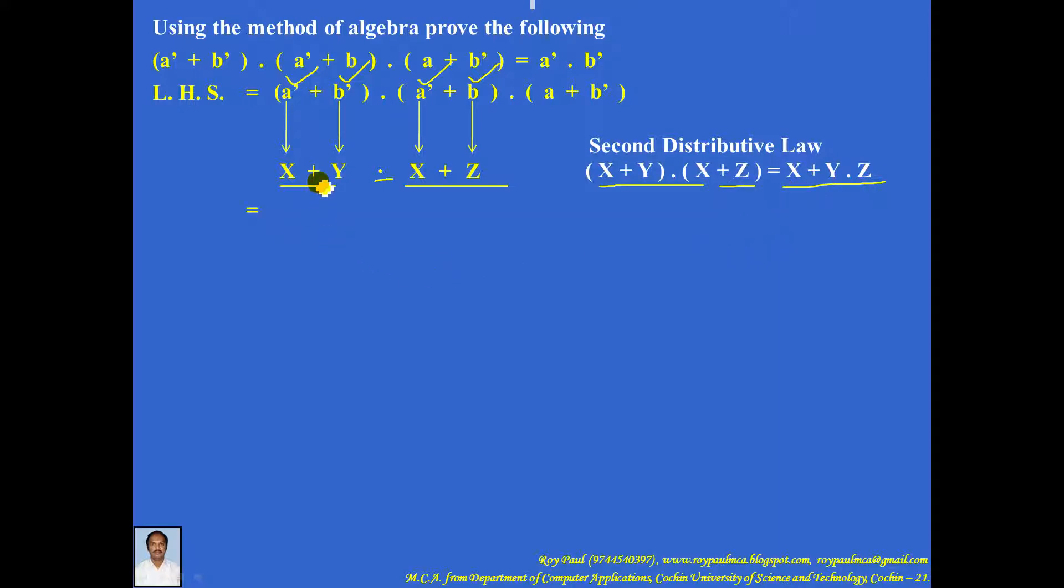So this can be simplified as x plus y·z. That is a' plus y·z. Now y is b' and z is b, so we have b' into b.